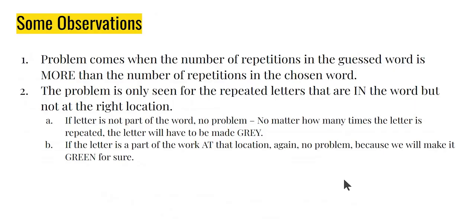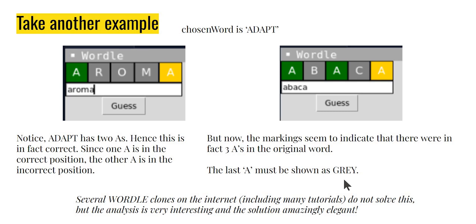Let's make a few observations. First, the problem comes only when the number of repetitions in the guess word is more than the number of repetitions in the chosen word. This is very important to understand. If the number of repetitions is equal, there is no problem. For example, the chosen word 'adapt' has a repeated letter — that itself is not a problem, so long as my guess also had exactly the same number of A's. With two A's in the guess 'aroma', one is in the right position, one in the wrong position — perfectly fine. However, the moment I have a guess with three A's, that's a problem.